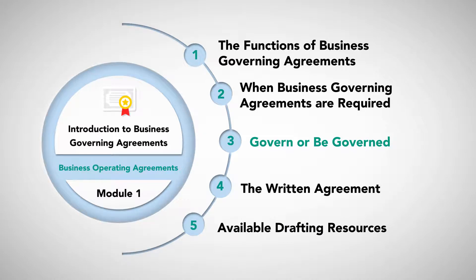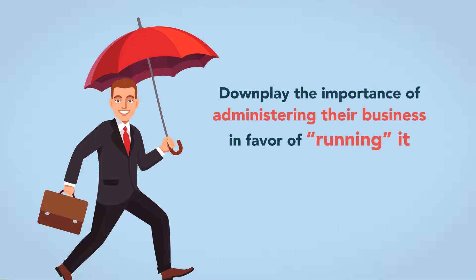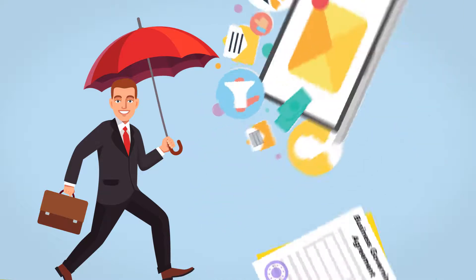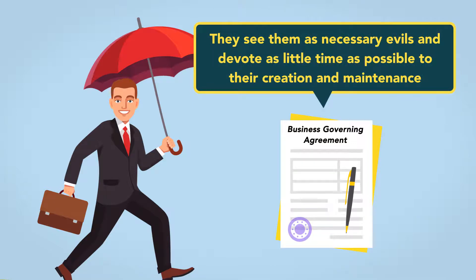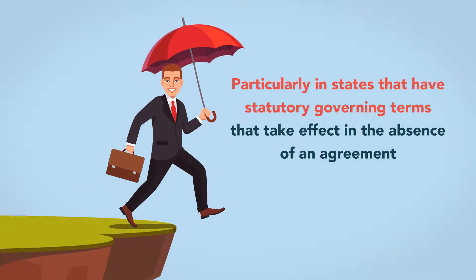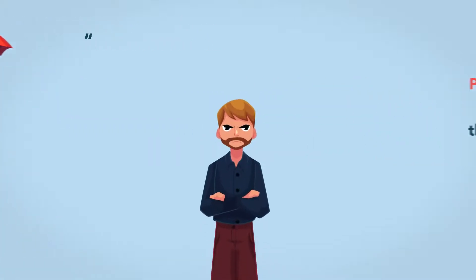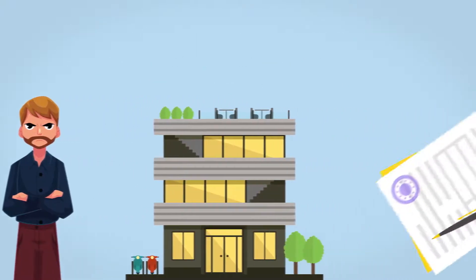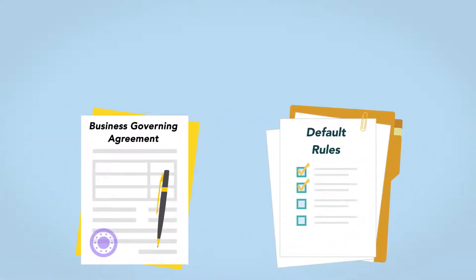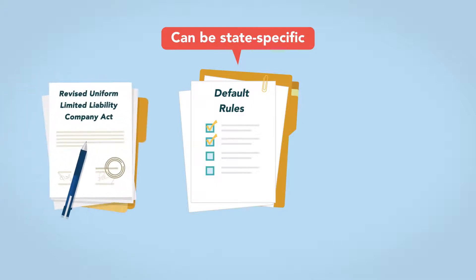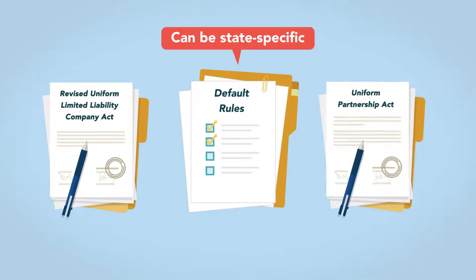Govern or be governed. Some business people downplay the importance of administering their businesses in favor of running them. To them, time spent thinking about meetings, elections, resolutions, and the like is time taken away from marketing or managing. So even if they have governing agreements, they see them as necessary evils and devote as little time as possible to their creation and maintenance. This can be a mistake, particularly in states that have statutory governing terms that take effect in the absence of an agreement. As the saying goes, if you don't have a plan for yourself, someone else will have one for you. If there is no governing document, many states have one-size-fits-all default rules that take effect, based on uniform acts like the Revised Uniform Limited Liability Company Act or the Uniform Partnership Act.